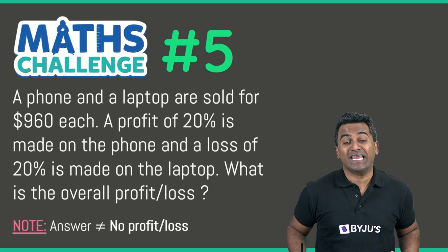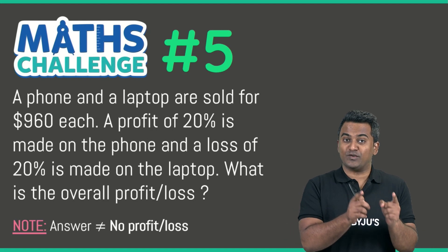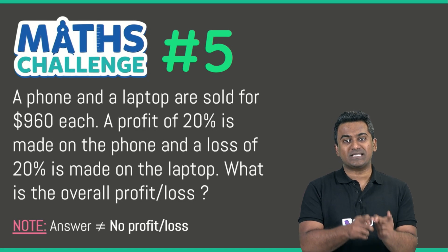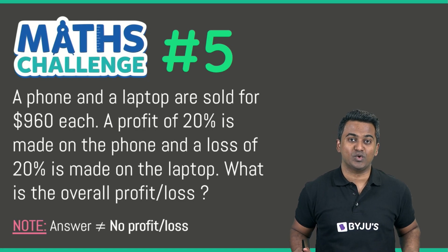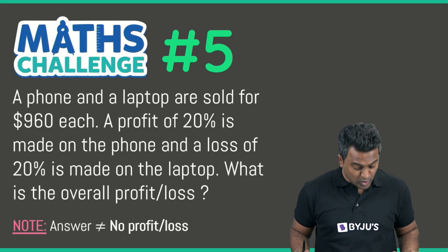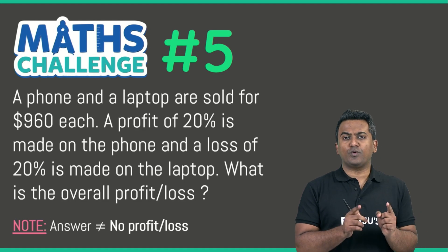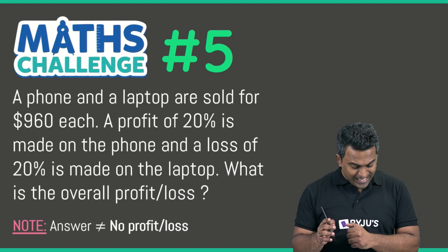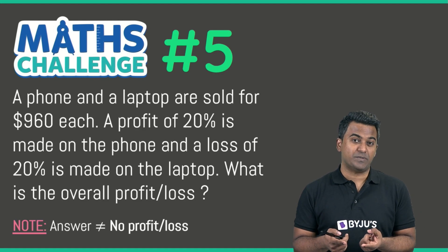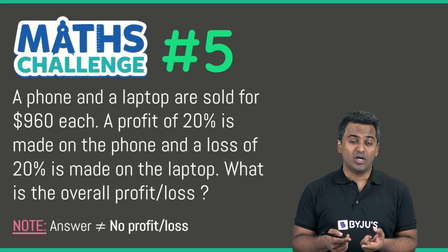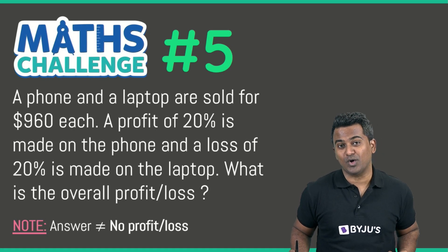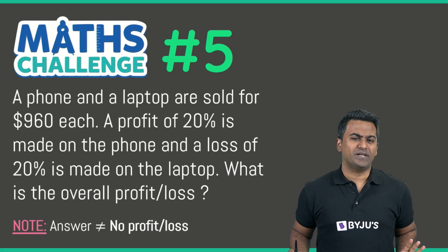Both the phone and the laptop are sold for $960 each, so the selling price of the phone is $960 and the selling price of the laptop is also $960. However, a profit of 20% has been made on the phone, and on the laptop a loss of 20% has been made. We need to figure out the overall profit or loss.